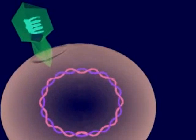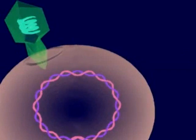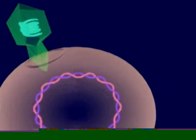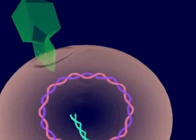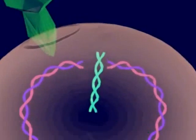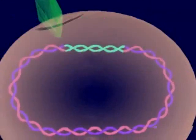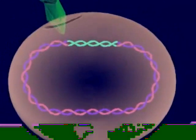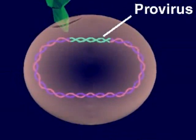A bacteriophage attaches to a bacterial host cell by locking onto a specific receptor site on the surface of the host cell. The virus then injects its DNA into the host cell. Once inside the cell, the viral DNA inserts itself into a specific site in the chromosome of the host cell. Viral DNA is then called a provirus.